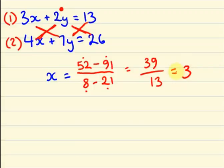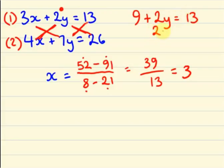I am going to substitute x = 3 into my first equation — we can substitute into any one of the equations, but I am considering the first equation. So 3 into x, that is 3 into 3 is 9, plus 2y equals 13. So 2y equals 13 minus 9, that is 4, and y equals 4 divided by 2, which is 2. So my x value is 3 and my y value is 2.